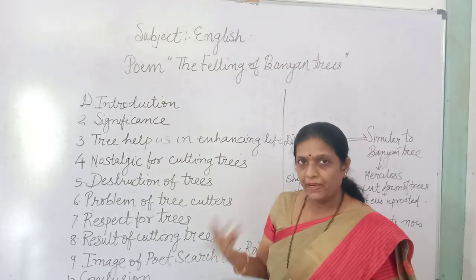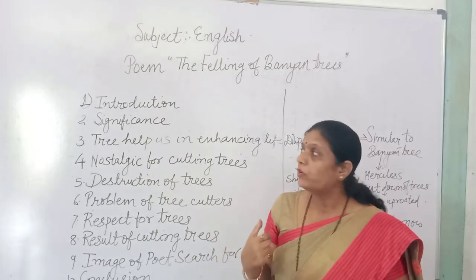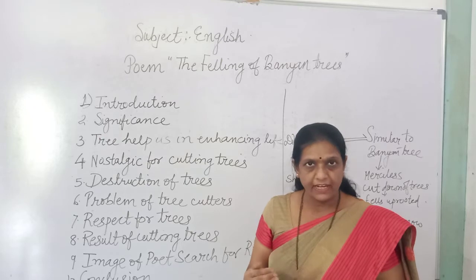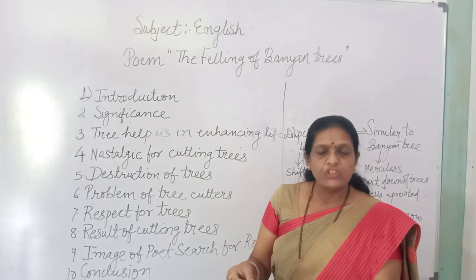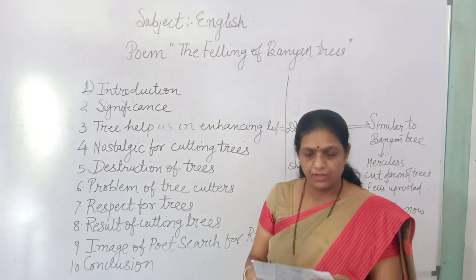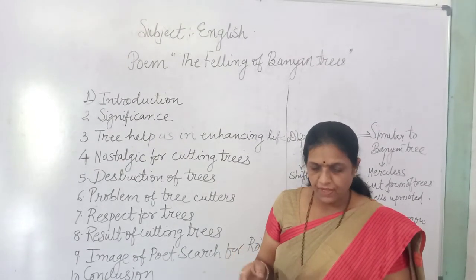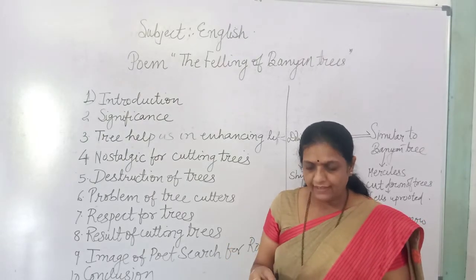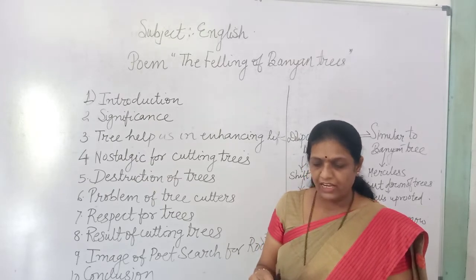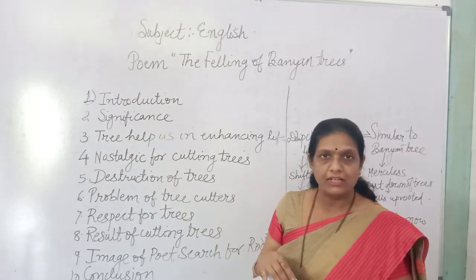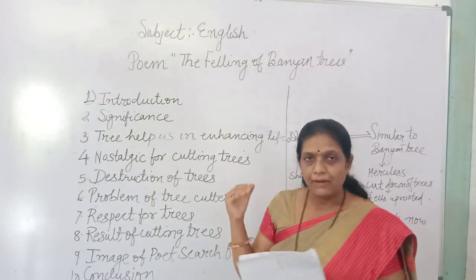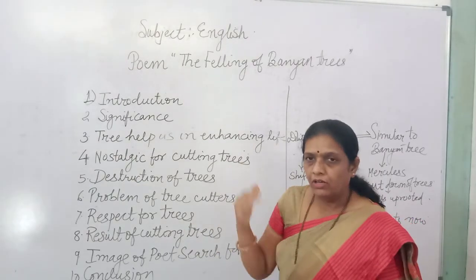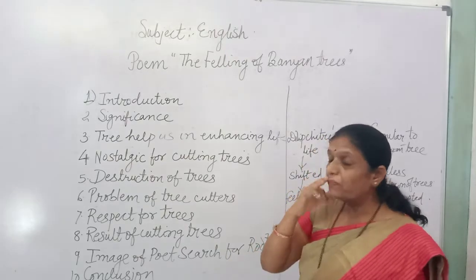Yesterday I had explained this poem. Today we would be moving towards the summary so that the entire poem is rounded up. The questions asked in the university pattern for this poem are: the summary related to the banyan tree, describe the banyan tree in the yard of the poet's ancient home, and describe the process of felling of the banyan tree and the act of cutting down the tree.